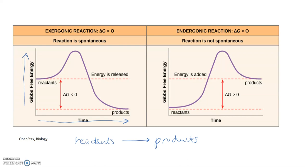If we look at the exergonic reaction, we see there is a certain amount of potential energy in the bonds of the reactant molecules, and a certain amount of potential energy in the bonds of the product molecules. In an exergonic reaction, there is more energy in the bonds of the reactants than there are in the bonds of the products.